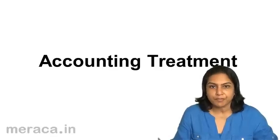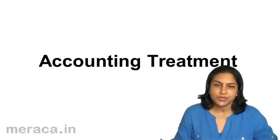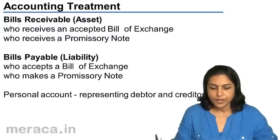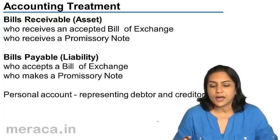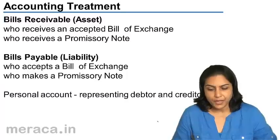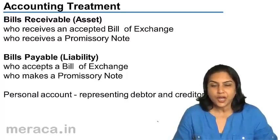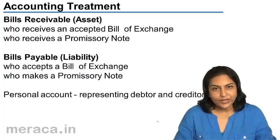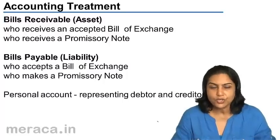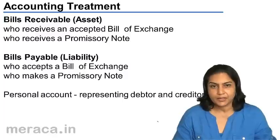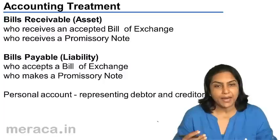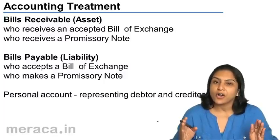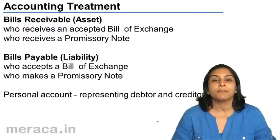Let us now move on to the accounting treatment for bills of exchange and promissory notes. We have understood the distinction between the two. However, as far as accounting transactions are concerned, when money is receivable — whether from a bill of exchange or a promissory note — we call it a bill receivable. When money is to be paid, whether on a bill of exchange or a promissory note, we call it a bill payable.